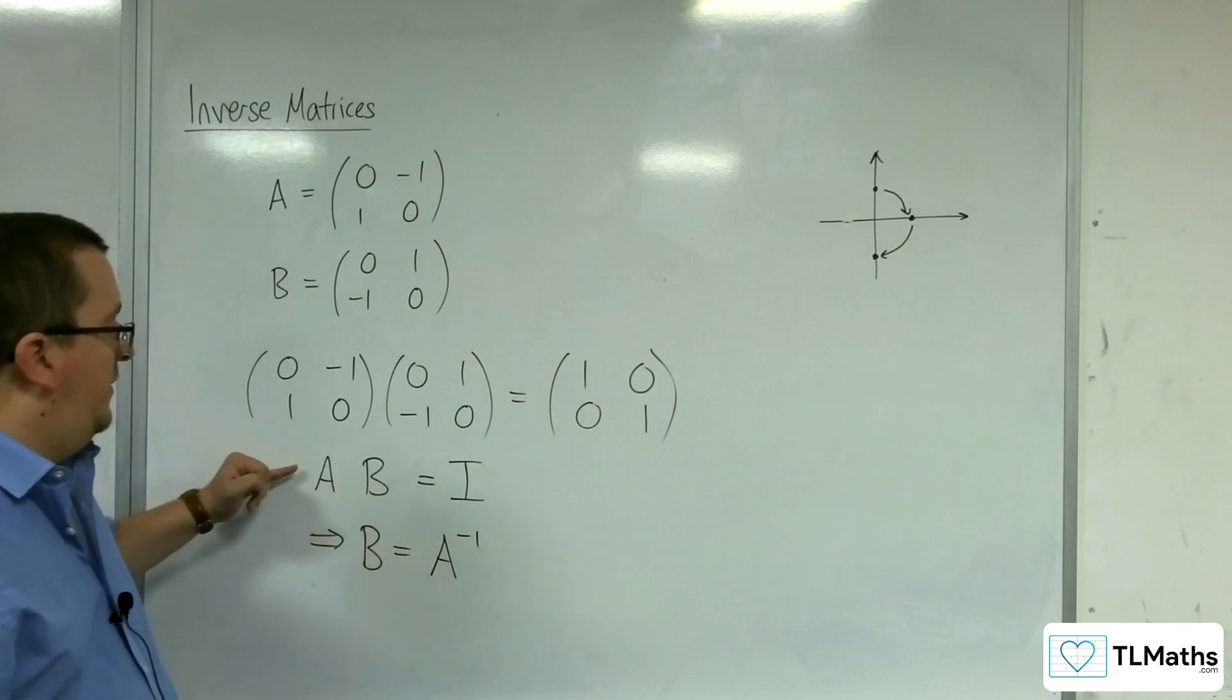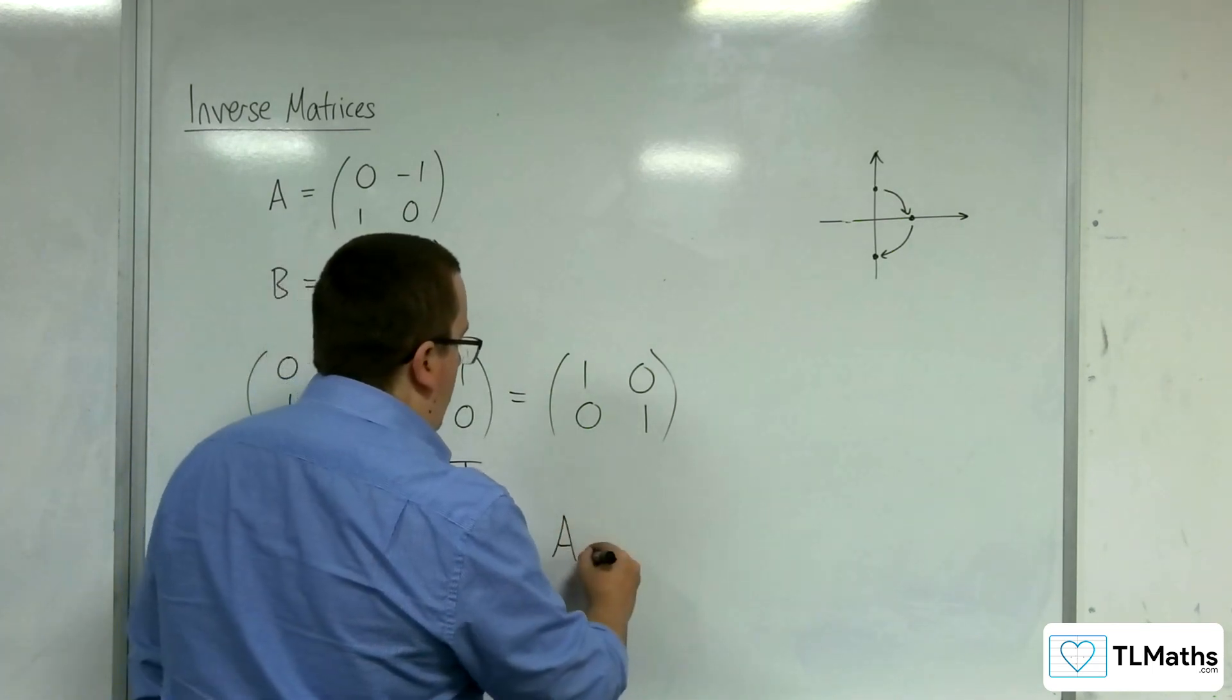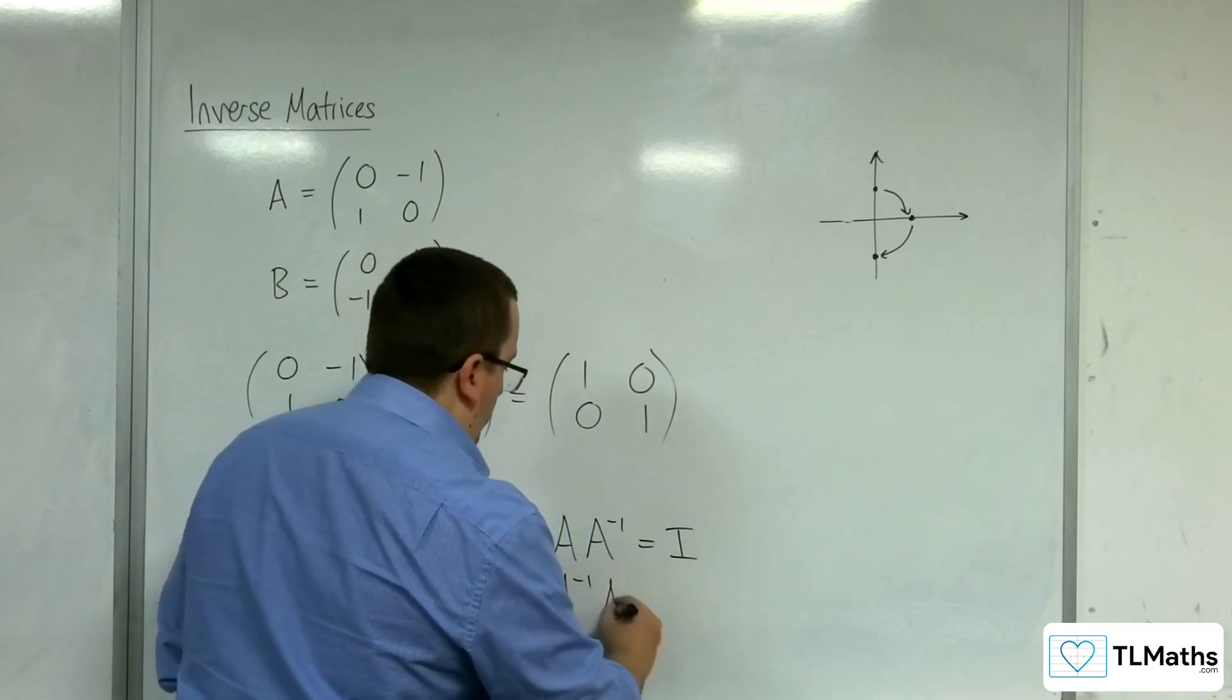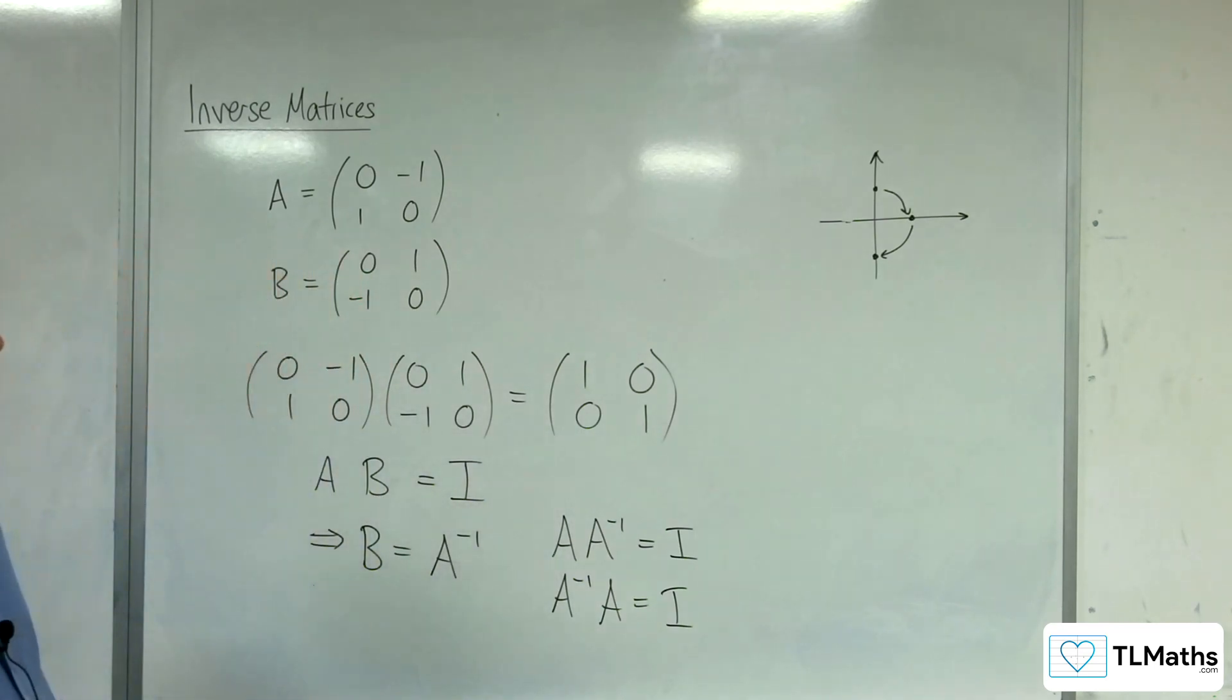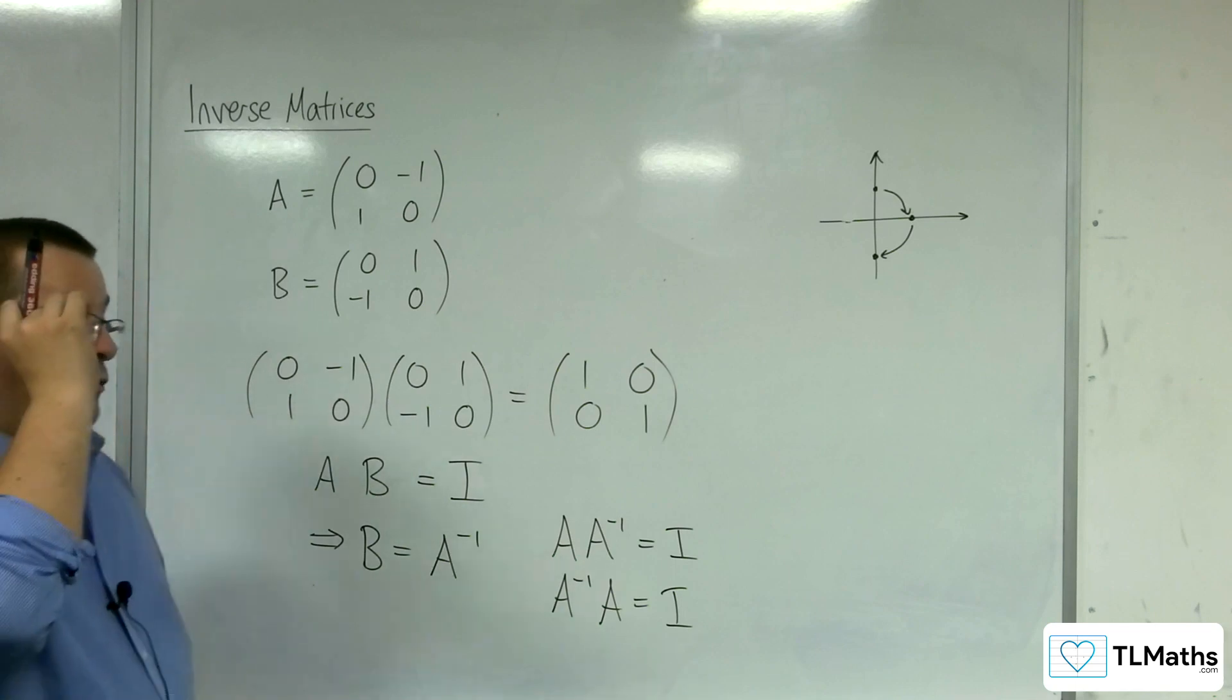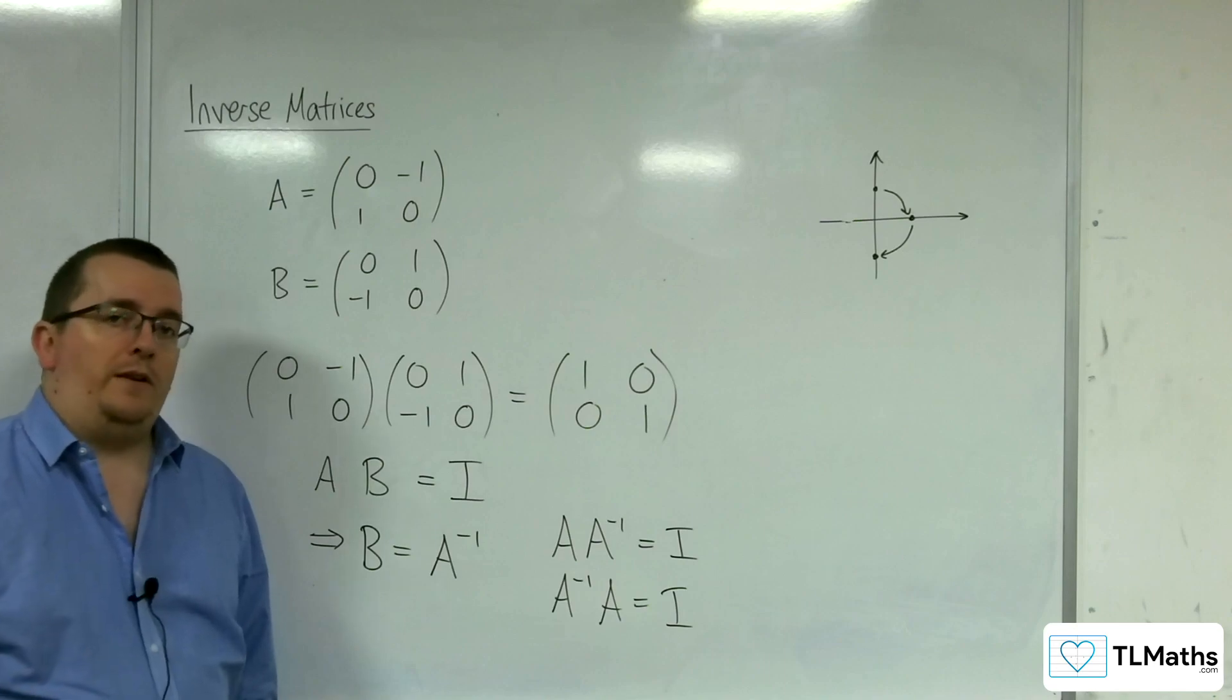So this is the important distinction. From that we can then write that A times A inverse equals I, or we could write it that way round. It doesn't matter. So inverse matrices invert one another. What we're going to be doing is investigating how to find these inverse matrices for 2 by 2 and 3 by 3.